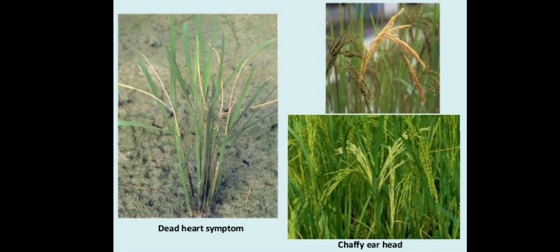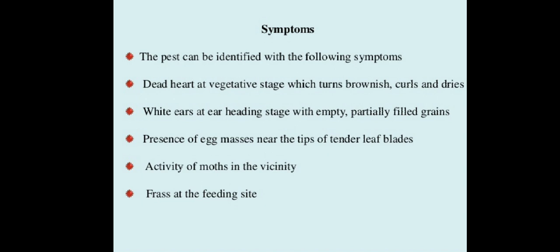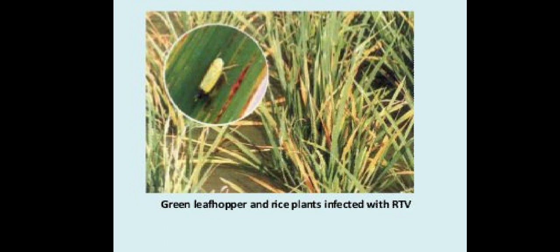These pictures show the dead heart symptom, chaffy ear head, and dried condition of the ear head. The pest can be identified by the following symptoms: dead heart at vegetative stage which turns brownish and dries; white ear heads at ear heading stage with empty or partially filled grains; presence of egg masses near the tip of tender leaf blades; activity of the moth in the vicinity; and frass at the feeding site.